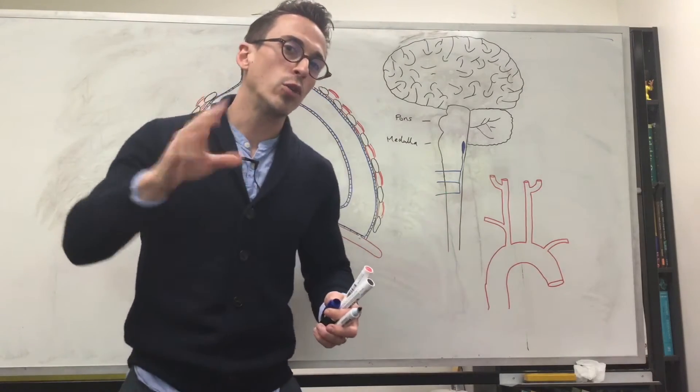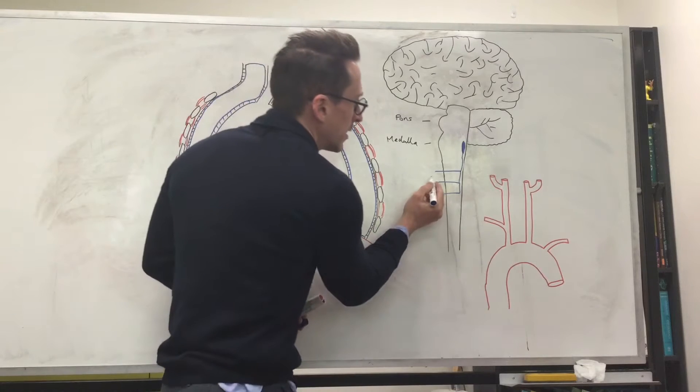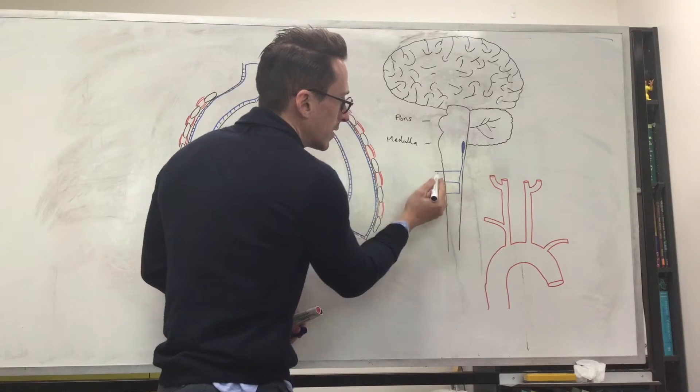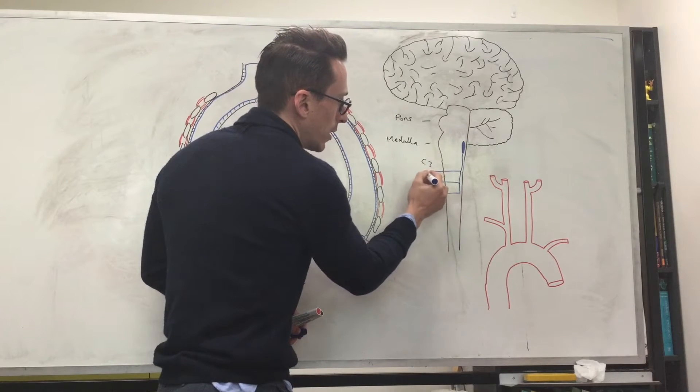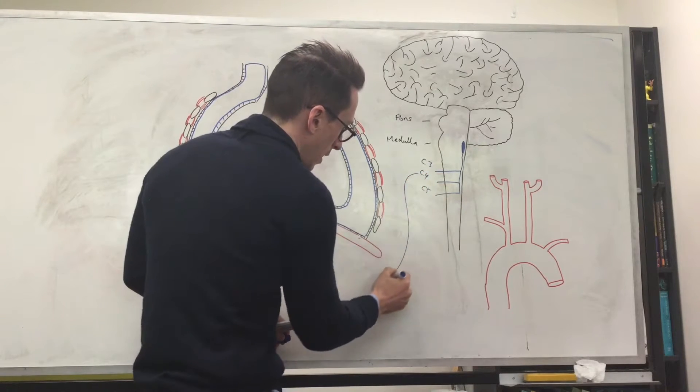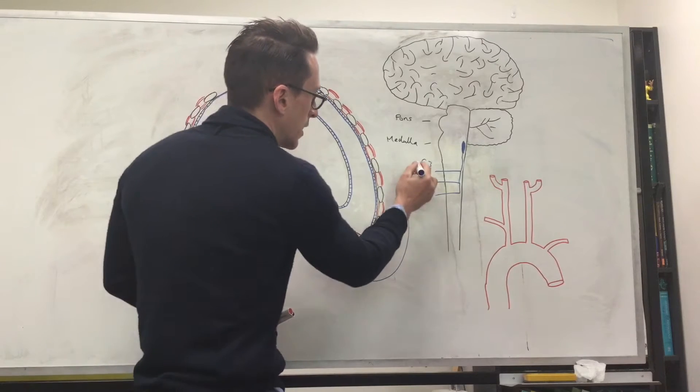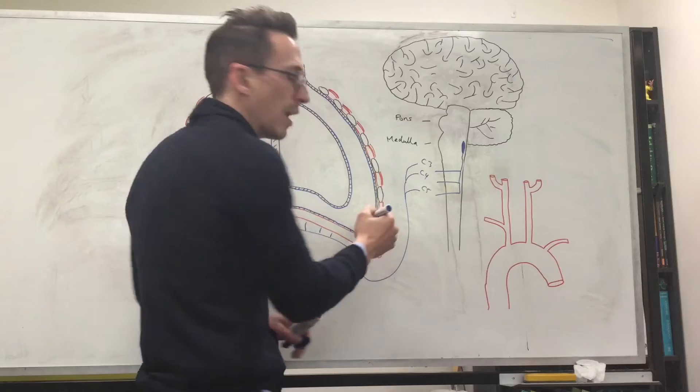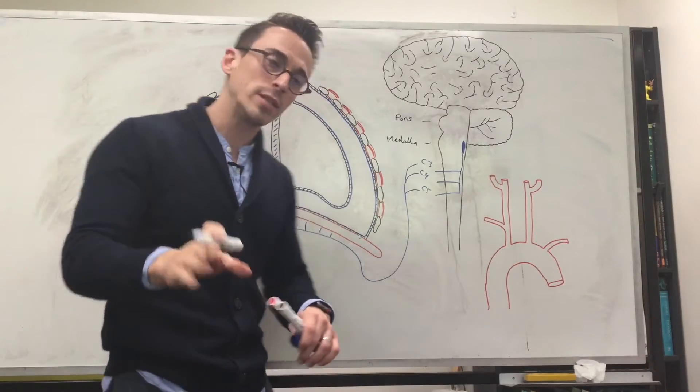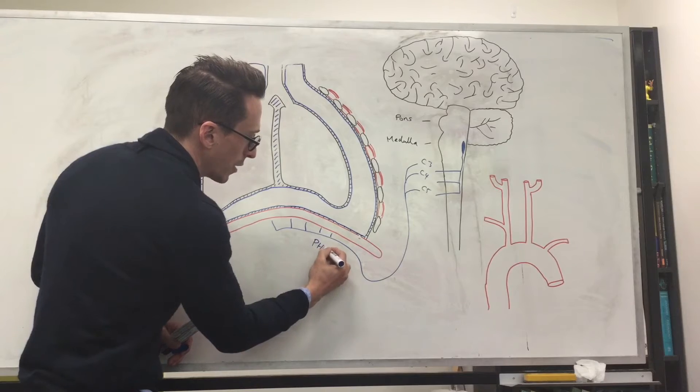So these are the cervical nerves, 3, 4, 5, right? At the level of the neck. And they send these signals out and they will send a signal through C3, C4, C5. And these signals go down and they innervate the diaphragm. So C3, C4, C5 keeps you alive. That's what we say because they innervate the diaphragm via a nerve called the phrenic nerve.